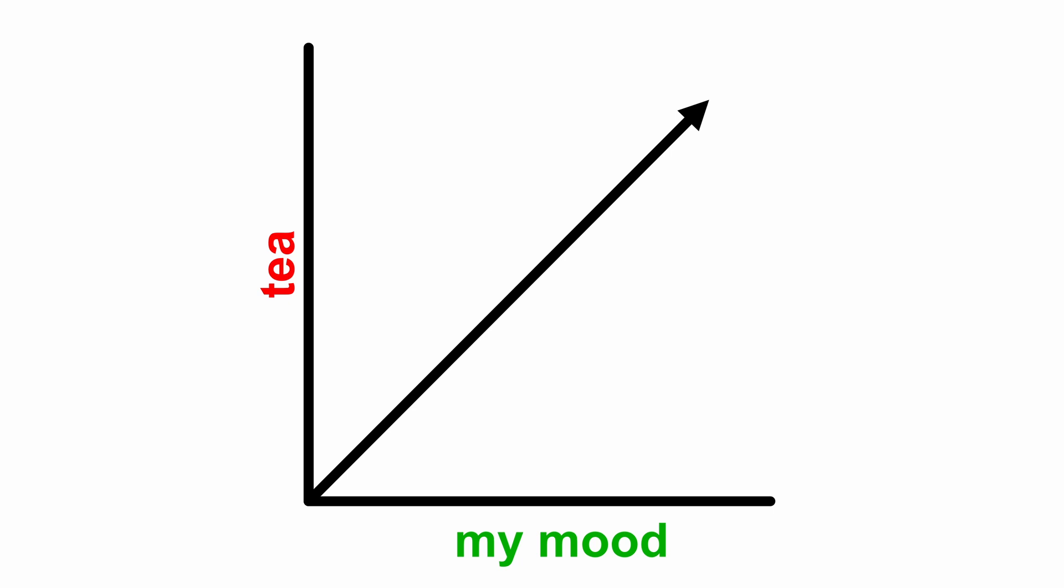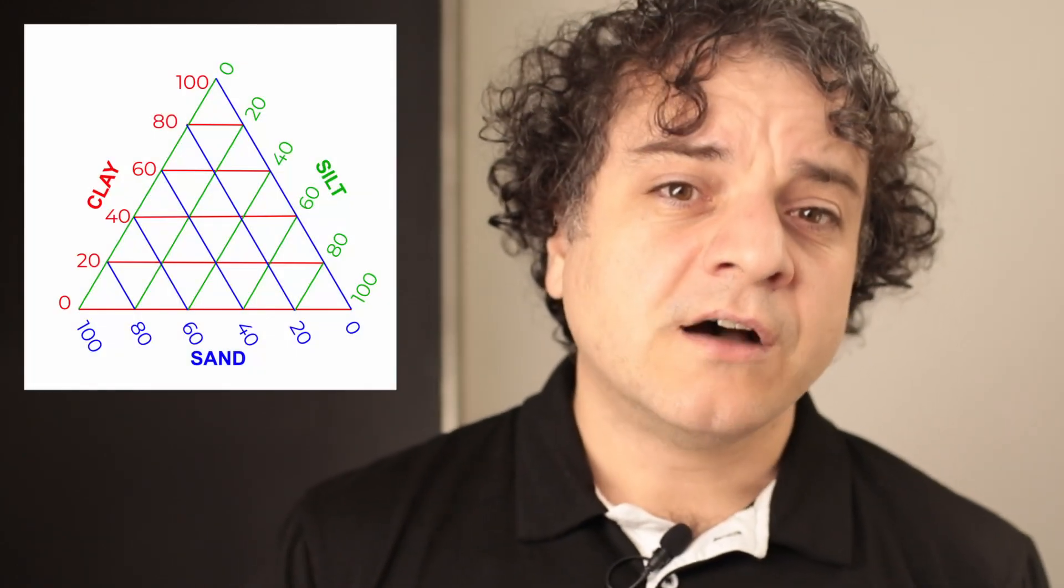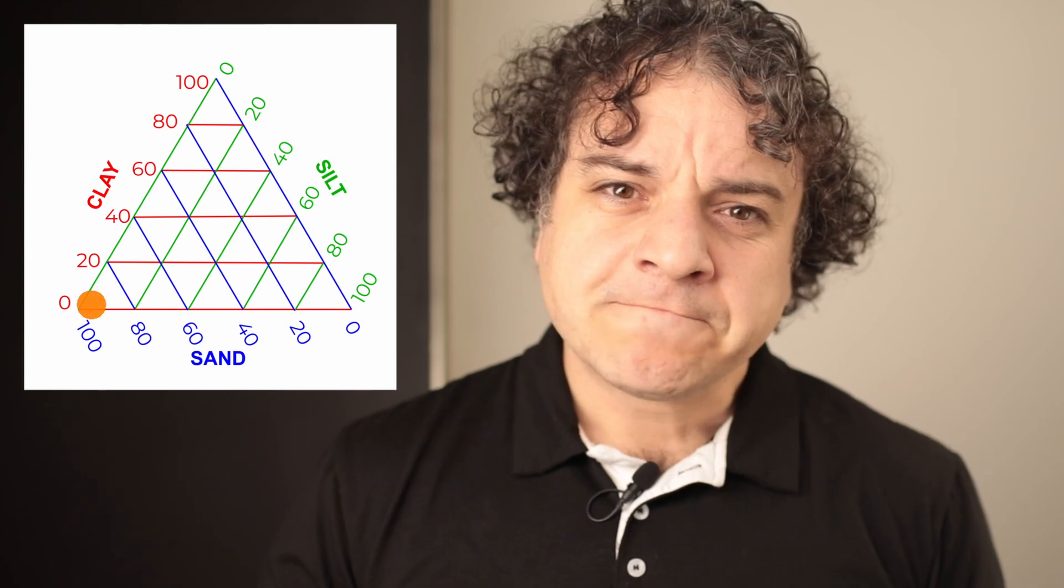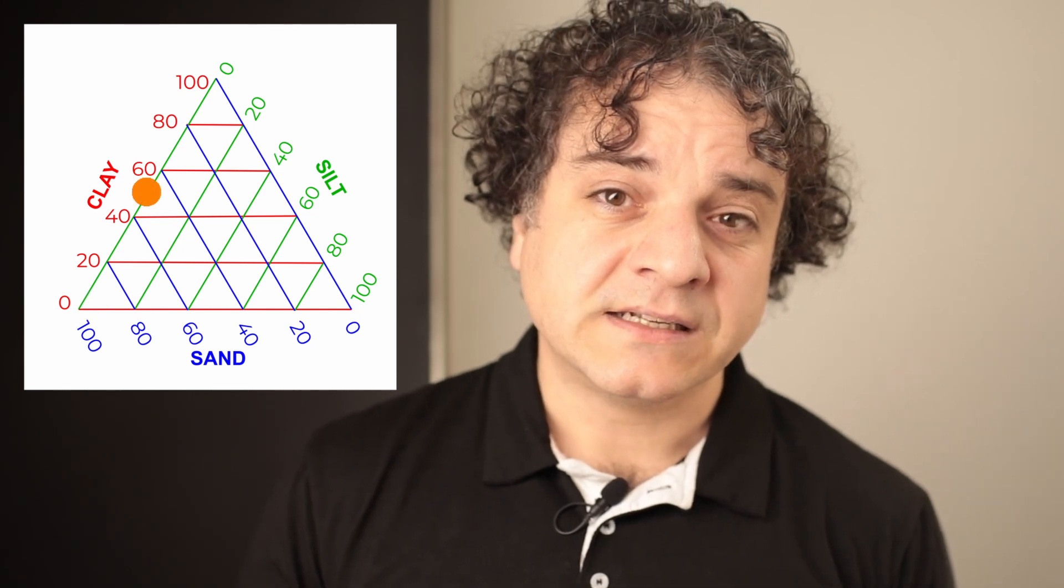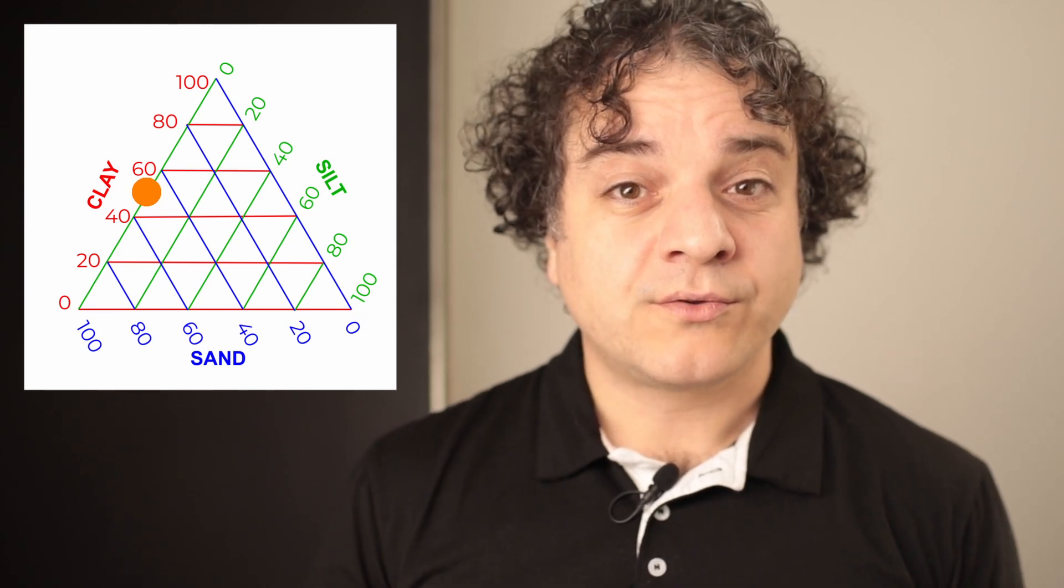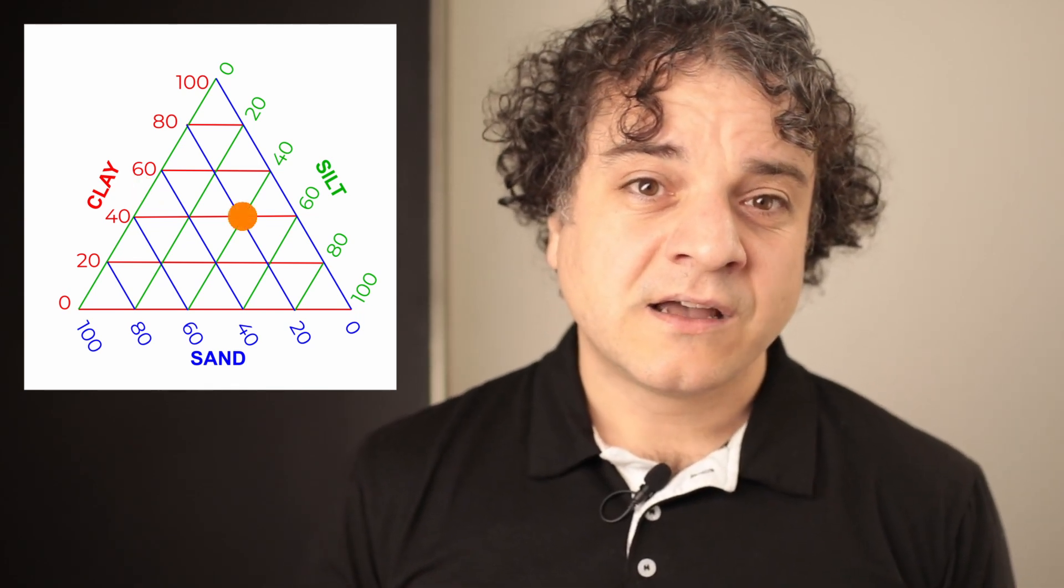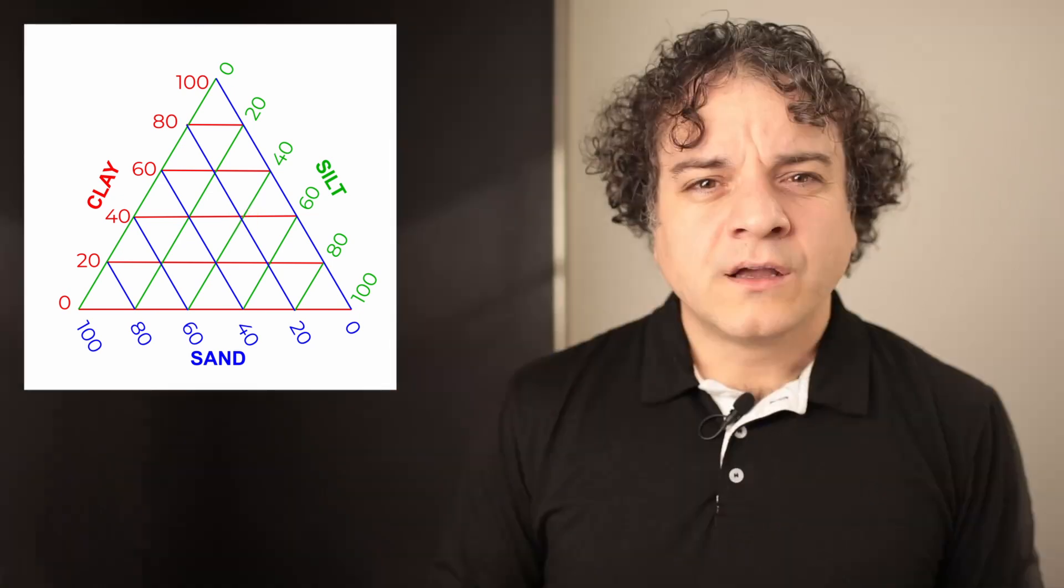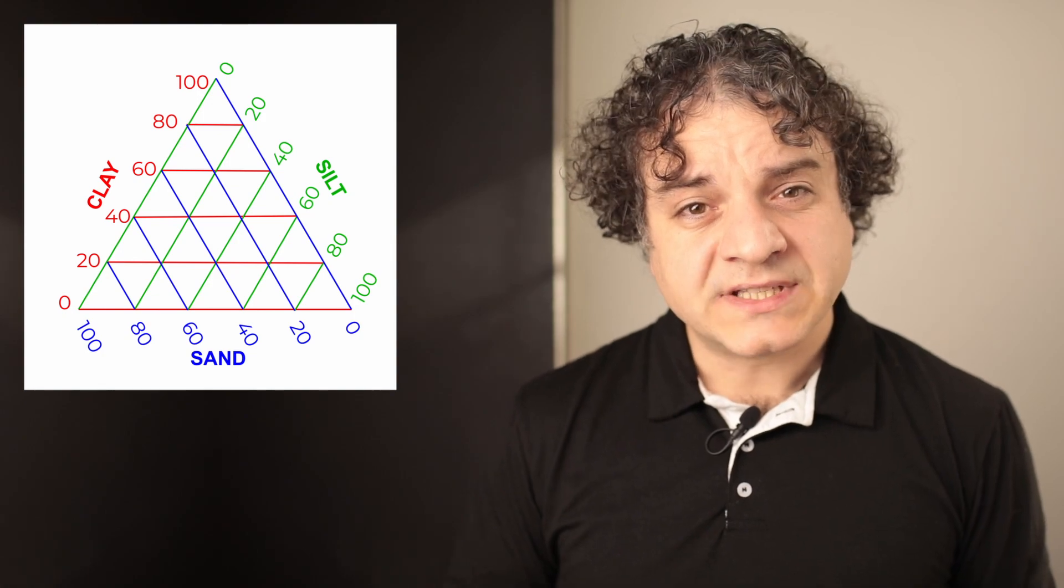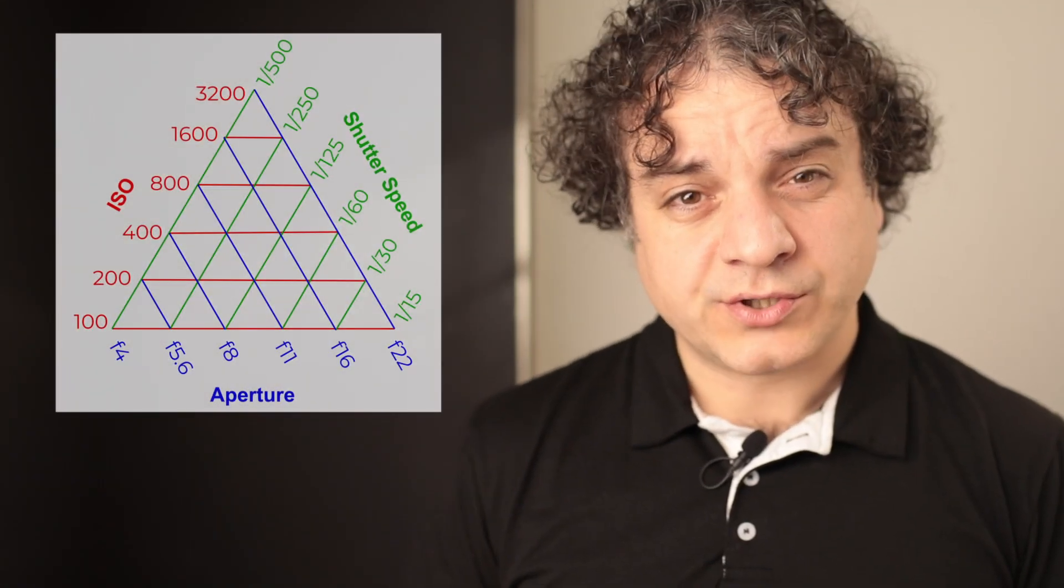Ternary plots are often used in science. For example, it can be used to categorize a soil based on the proportions of the three main constituents present. Each tip of the triangle represents 100% of one of those constituents, like 100% of sand here. We can move along the edge to find a spot where we have 50% sand and 50% clay. Or we can dive into the triangle and plot a mixture of all three, like 20% sand, 40% clay, and 40% silt. No matter where we are in the triangle, the parts always sum to 100%. And that's exactly what we get in the exposure triangle.